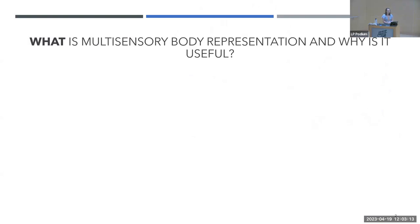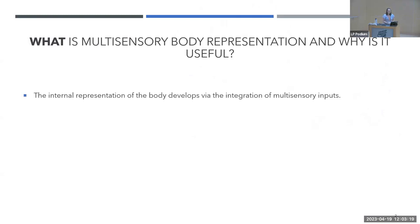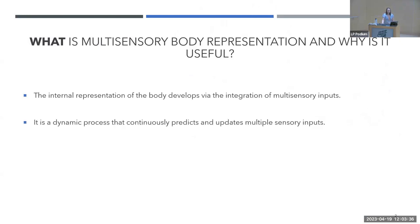We can start with a simple question: what is multi-sensory body representation and why is it useful? How do I know that this is my body? The internal representation of the body develops through integration of multiple sensory inputs — visual, tactile, somatosensory, proprioceptive, even interoceptive. This is a dynamic process because our brain continuously predicts and updates these multiple sensory inputs without us being aware of it.